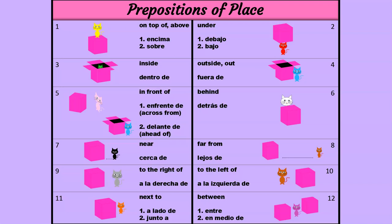You probably noticed that some of these words have two translations. Try to use these words only when you're talking about positions. For example, sobre, bajo, and en medio de have other meanings when used outside the context of position.